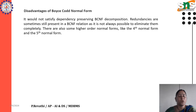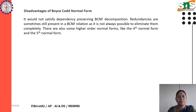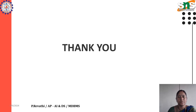A disadvantage is that it would not always satisfy dependency-preserving decomposition. Redundancies are sometimes still present in Boyce-Codd Normal Form, as it is not always possible to eliminate them completely. There are also higher-order normal forms, such as the fourth normal form and the fifth normal form.